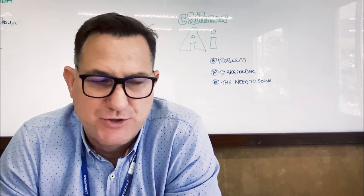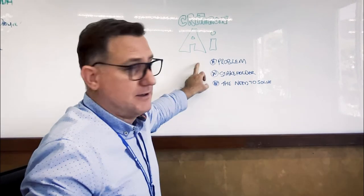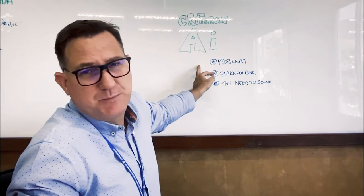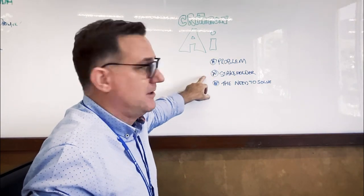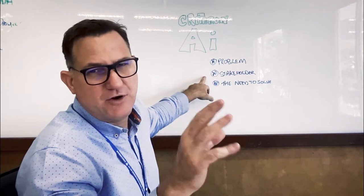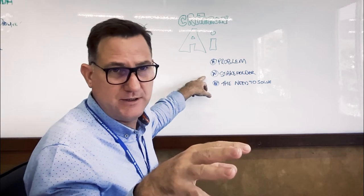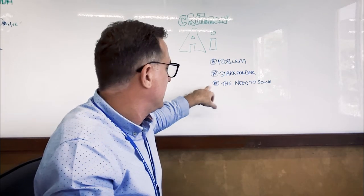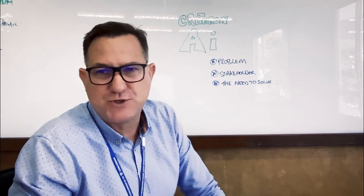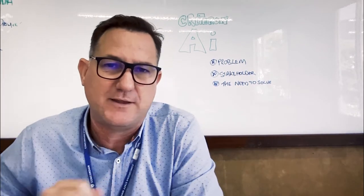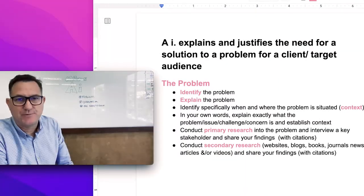To break it up into three pieces: you need to explain what the problem is, you need to identify some of the key stakeholders, and then you need to persuade the reader that this problem really does need to be solved.